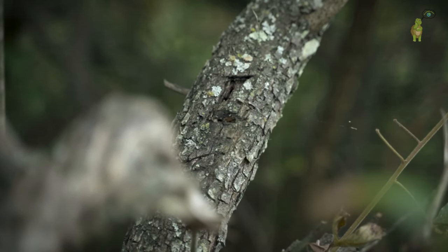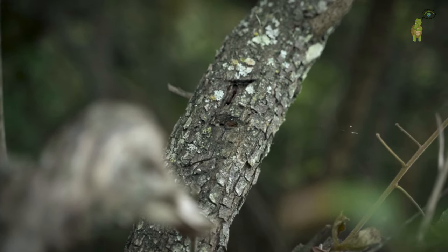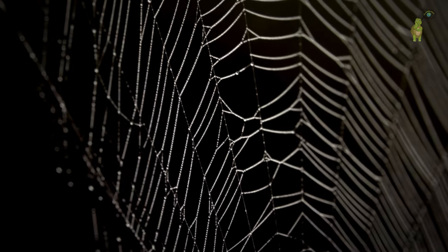Darwin's bark spiders are known for creating some of the largest webs in nature, spanning up to 30 square feet. Some individuals even spin webs long enough to serve as bridges over small bodies of water.